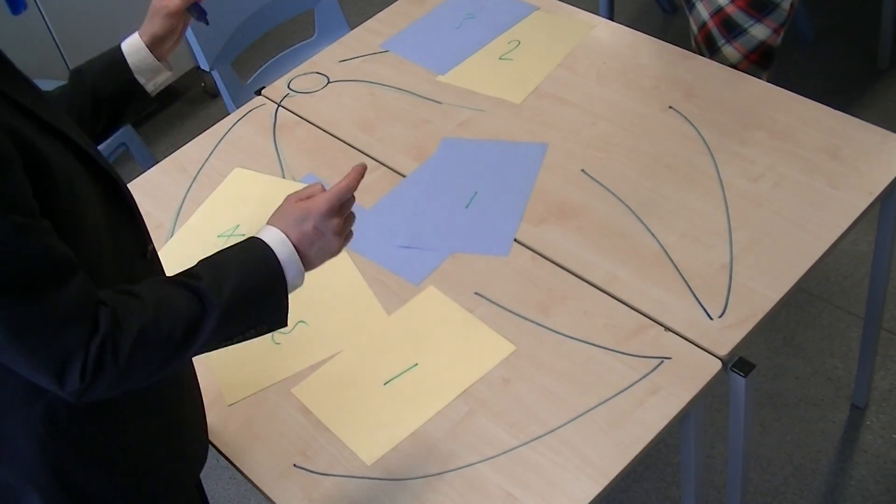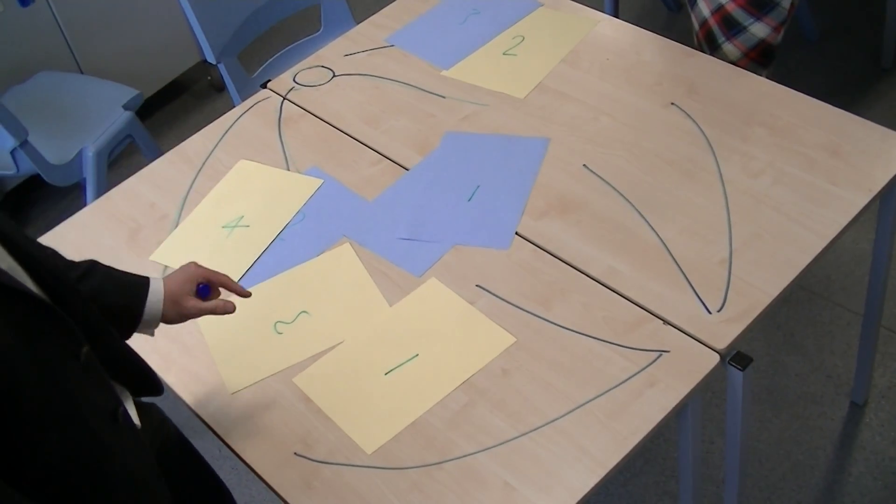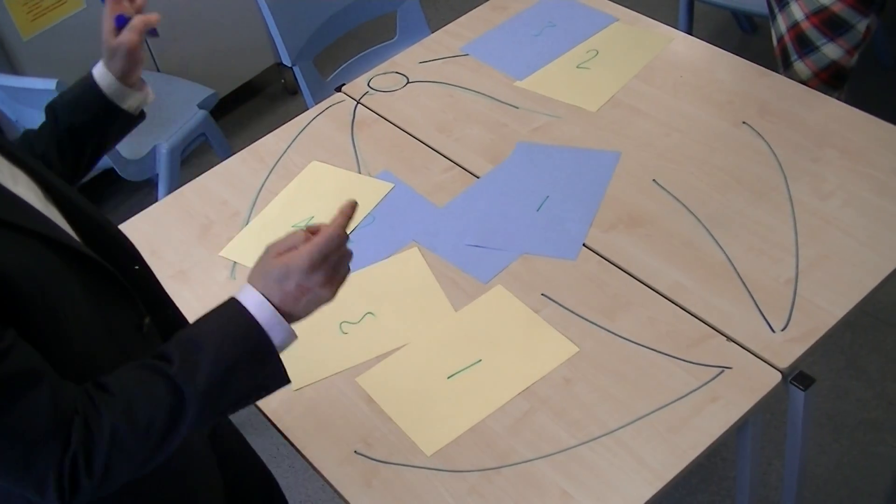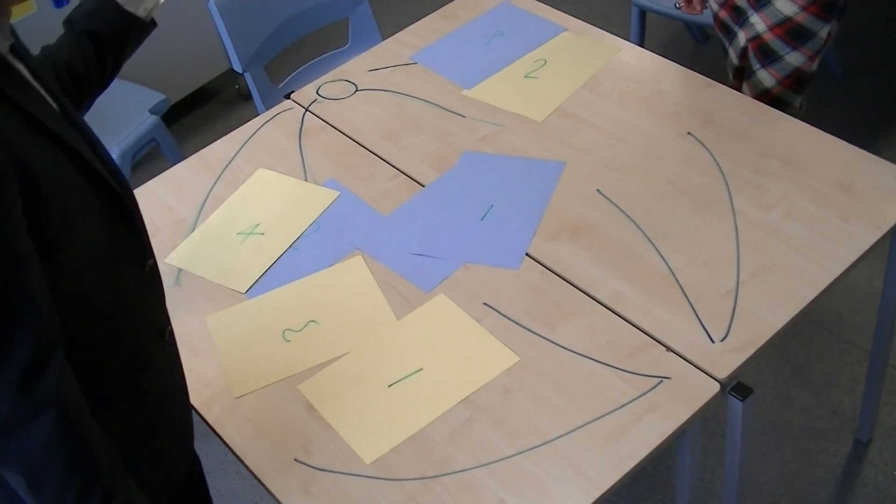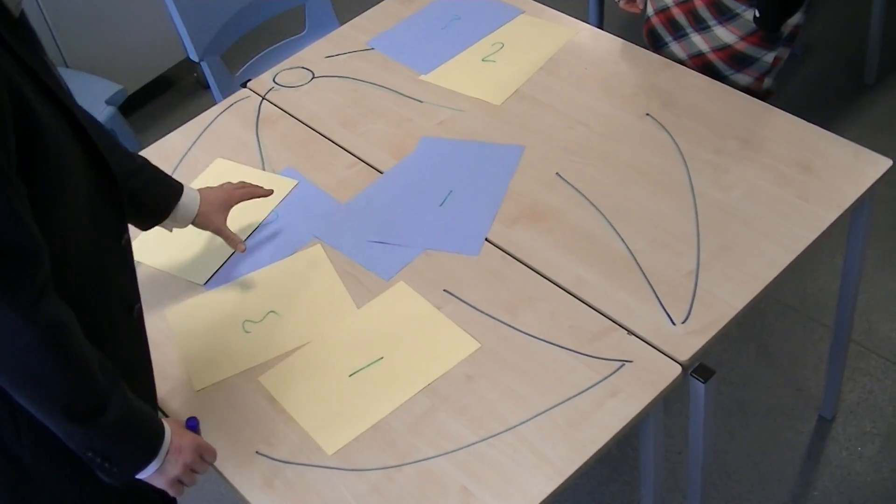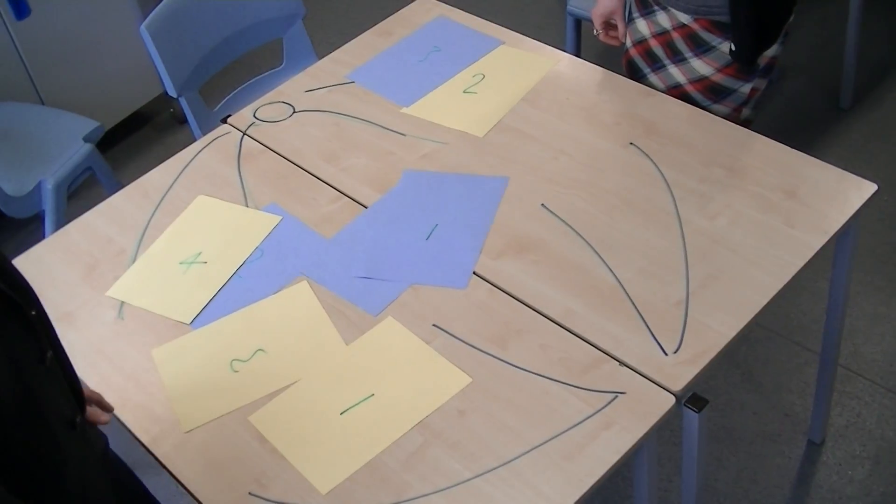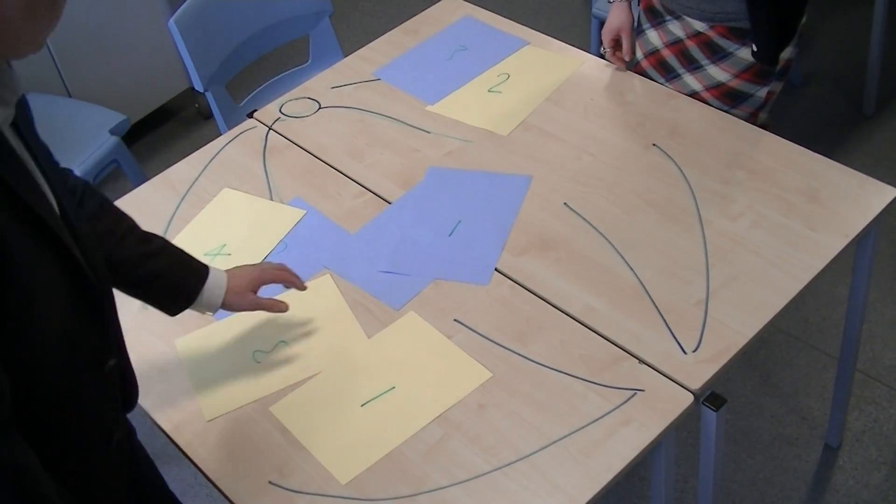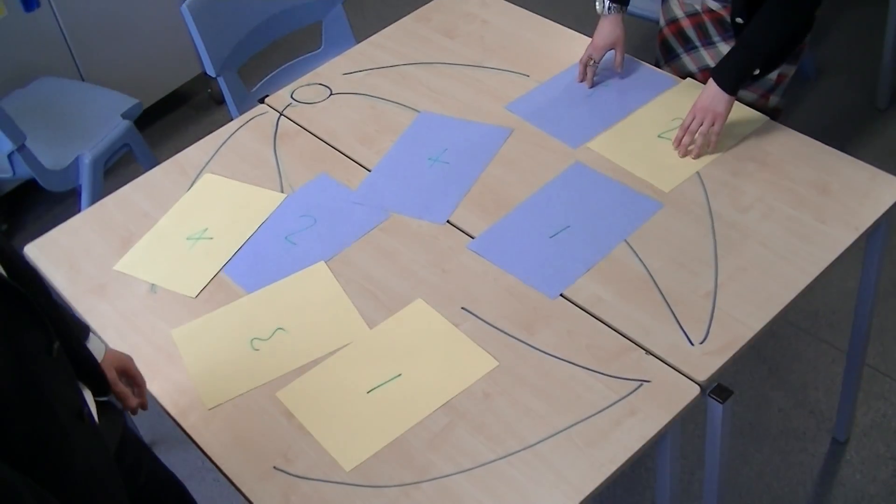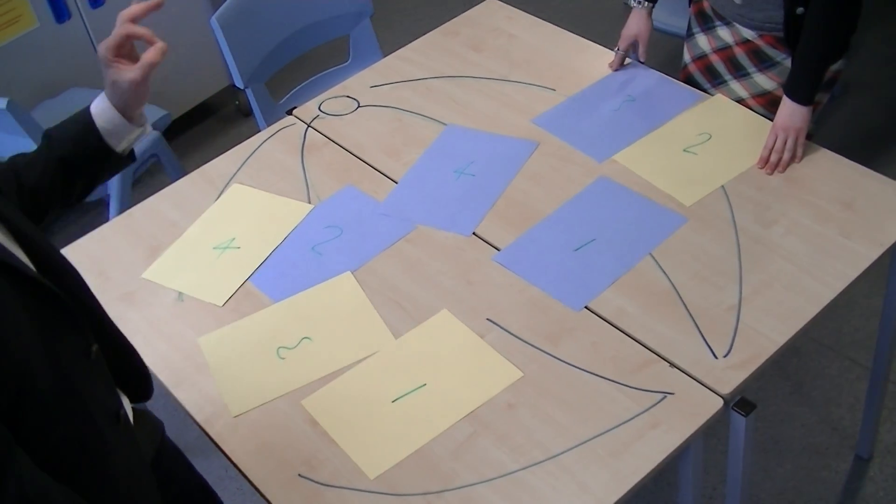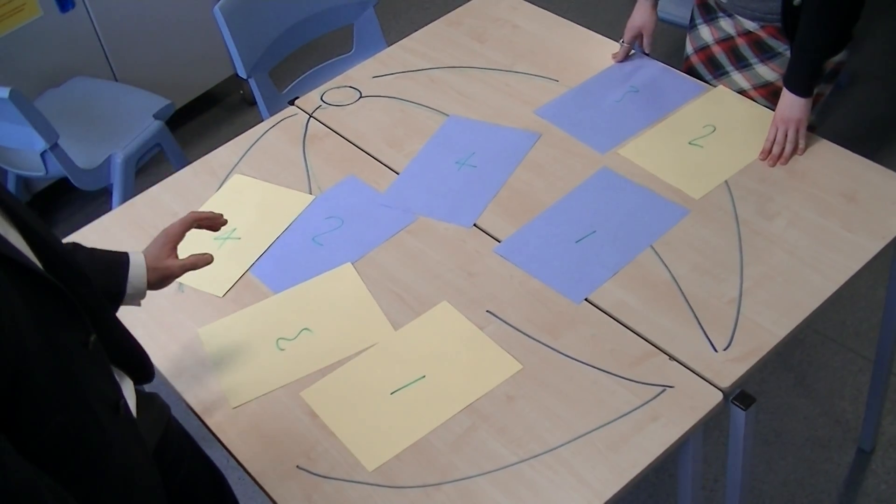Now we're talking about how meiosis creates variation, and I'm trying to introduce independent assortment. Right, Lucy, how many pairs of chromosomes have we got here? Let's separate them out. We've got four. So we've got four homologous pairs of chromosomes.